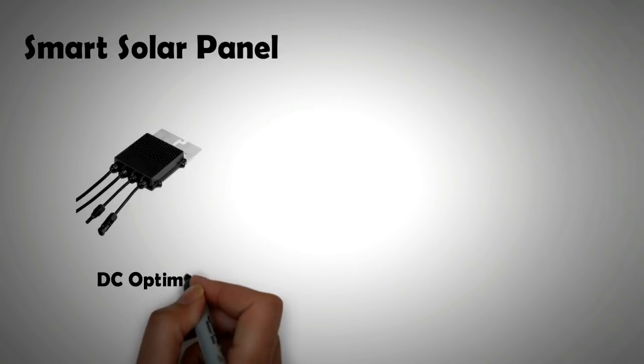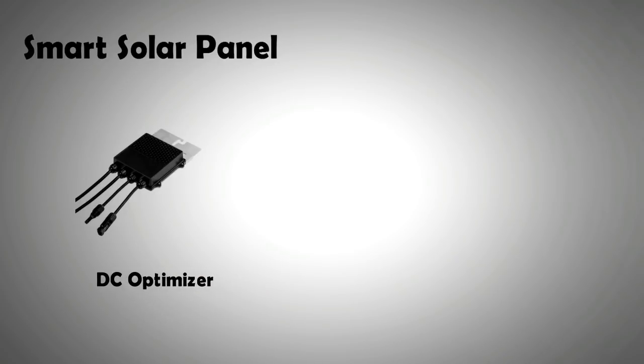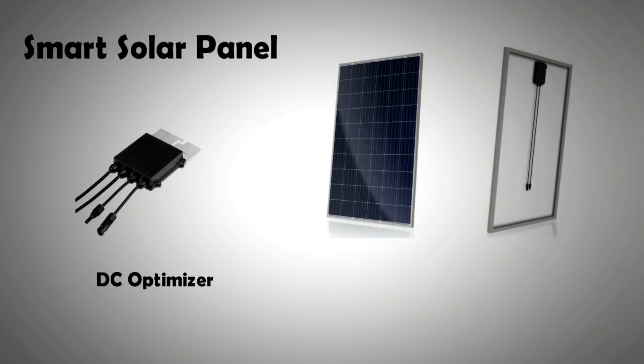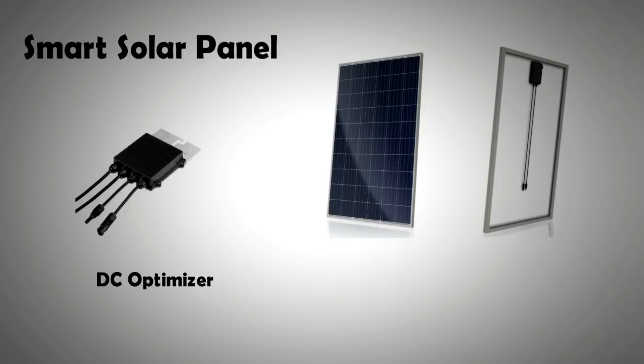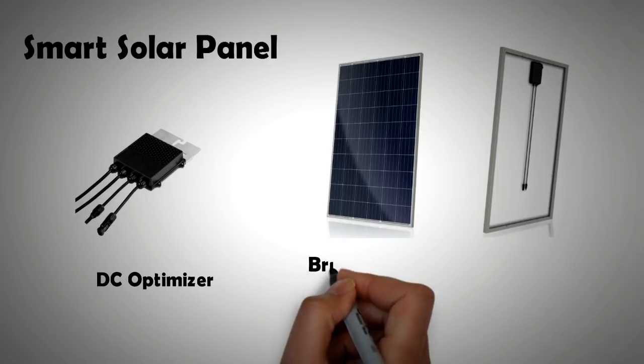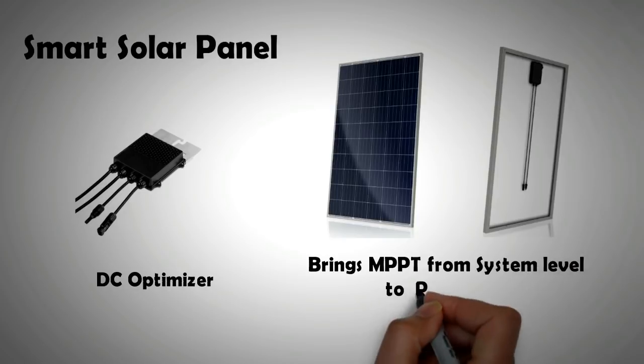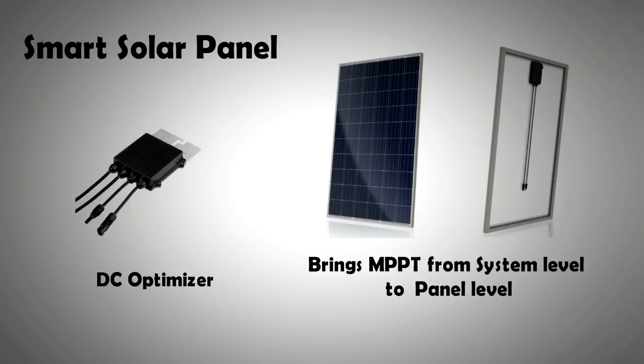Another new technology that is already available in the market is the smart panel. The smart panel comes with a DC optimizer built into the junction box of the panel. The idea is to take the MPPT, or the maximum power point tracking, to the panel level. Note that the MPPT system tries to maximize the output of the panel even in adverse weather conditions.